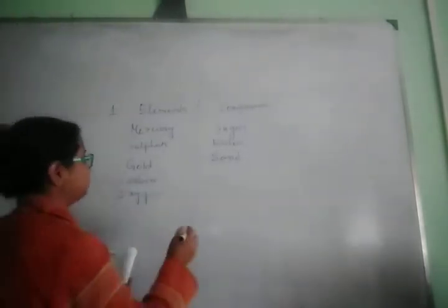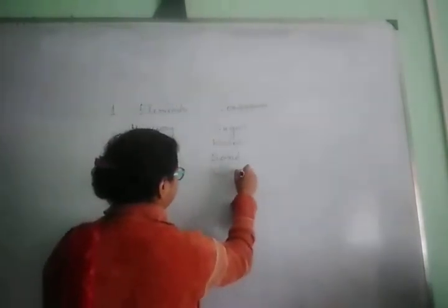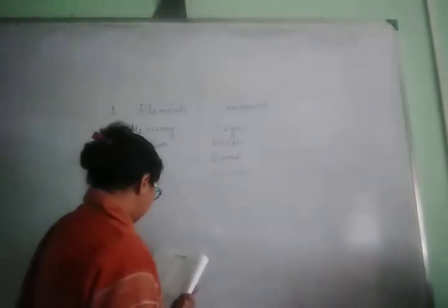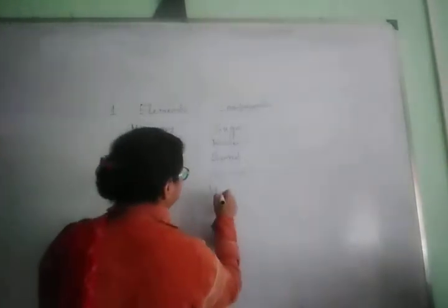Sand is silicon dioxide (SiO₂), so sand is also a compound. Gold is an element. Carbon is also an element. Oxygen is also an element. Alcohol is a compound. Coal is also a compound. Iron is an element. Marble is calcium carbonate, so marble is also a compound.